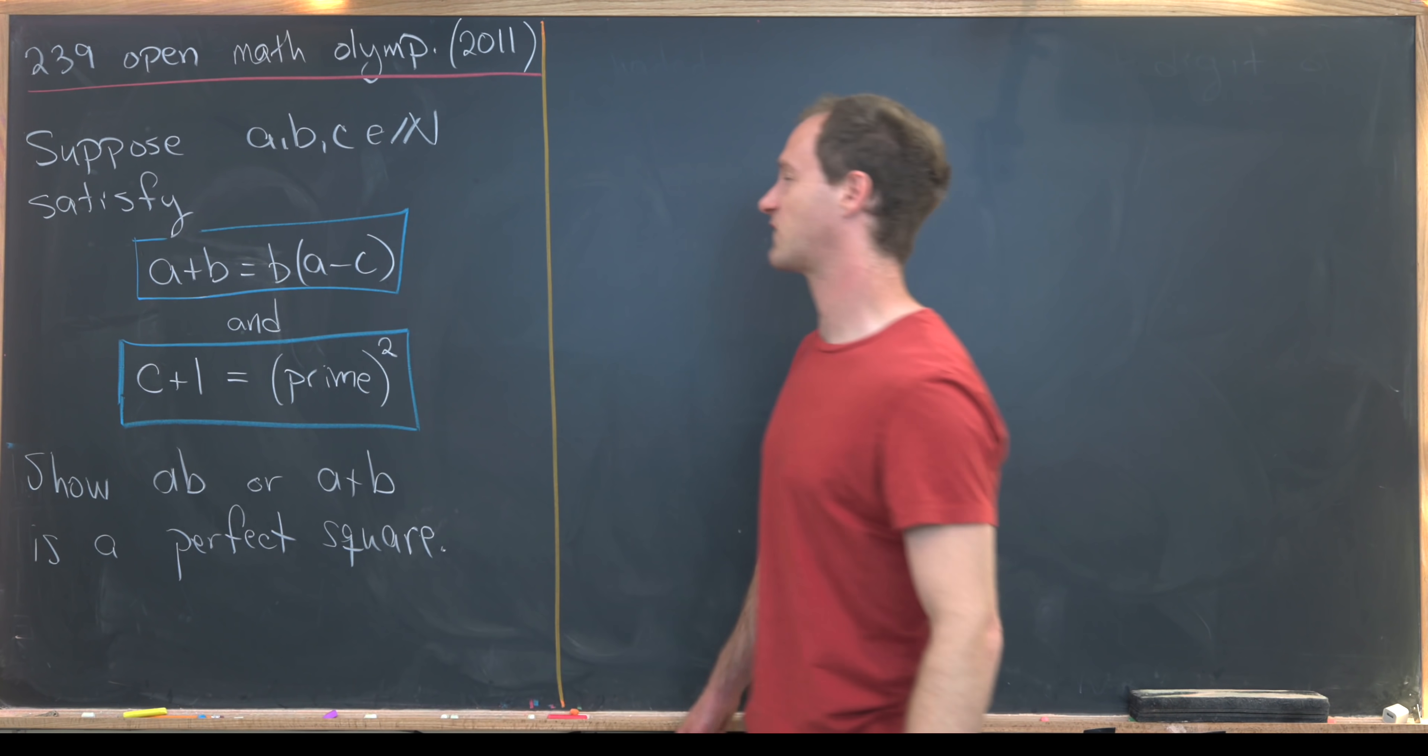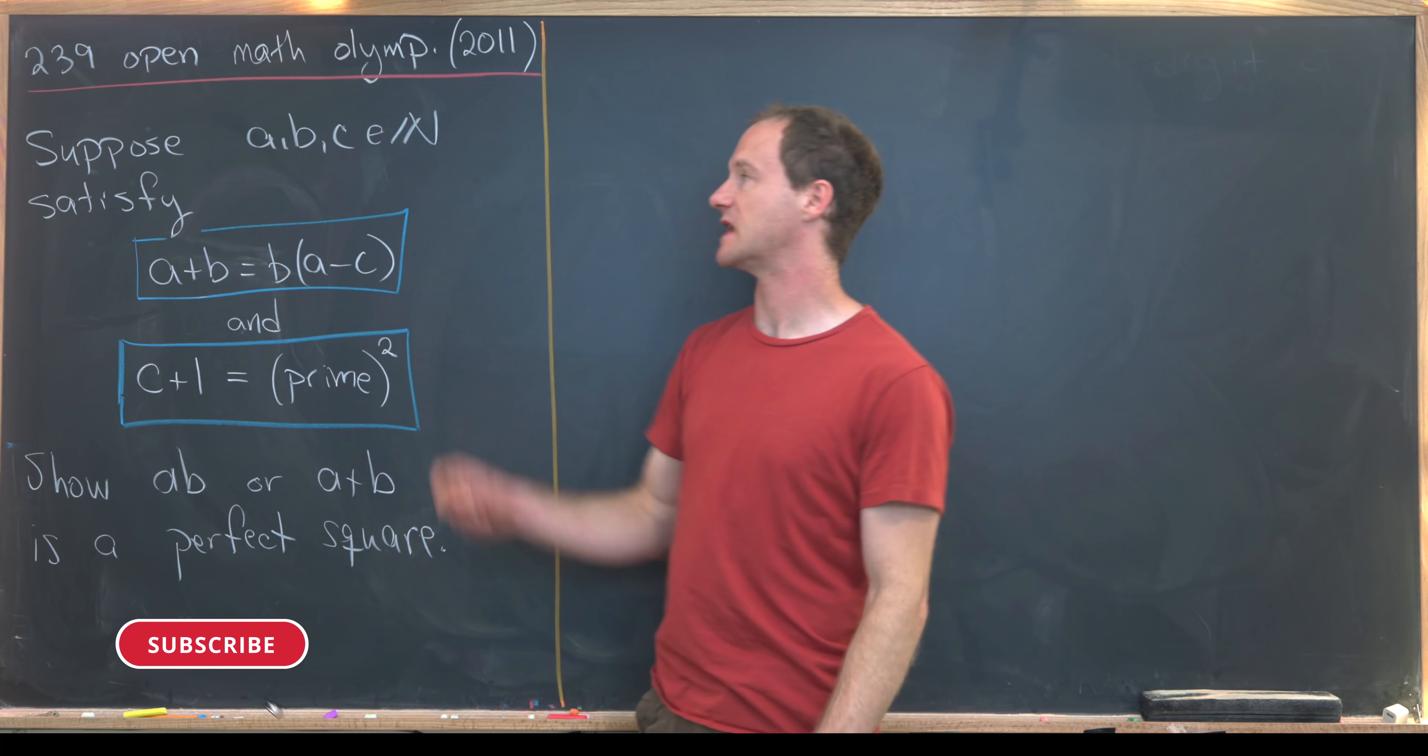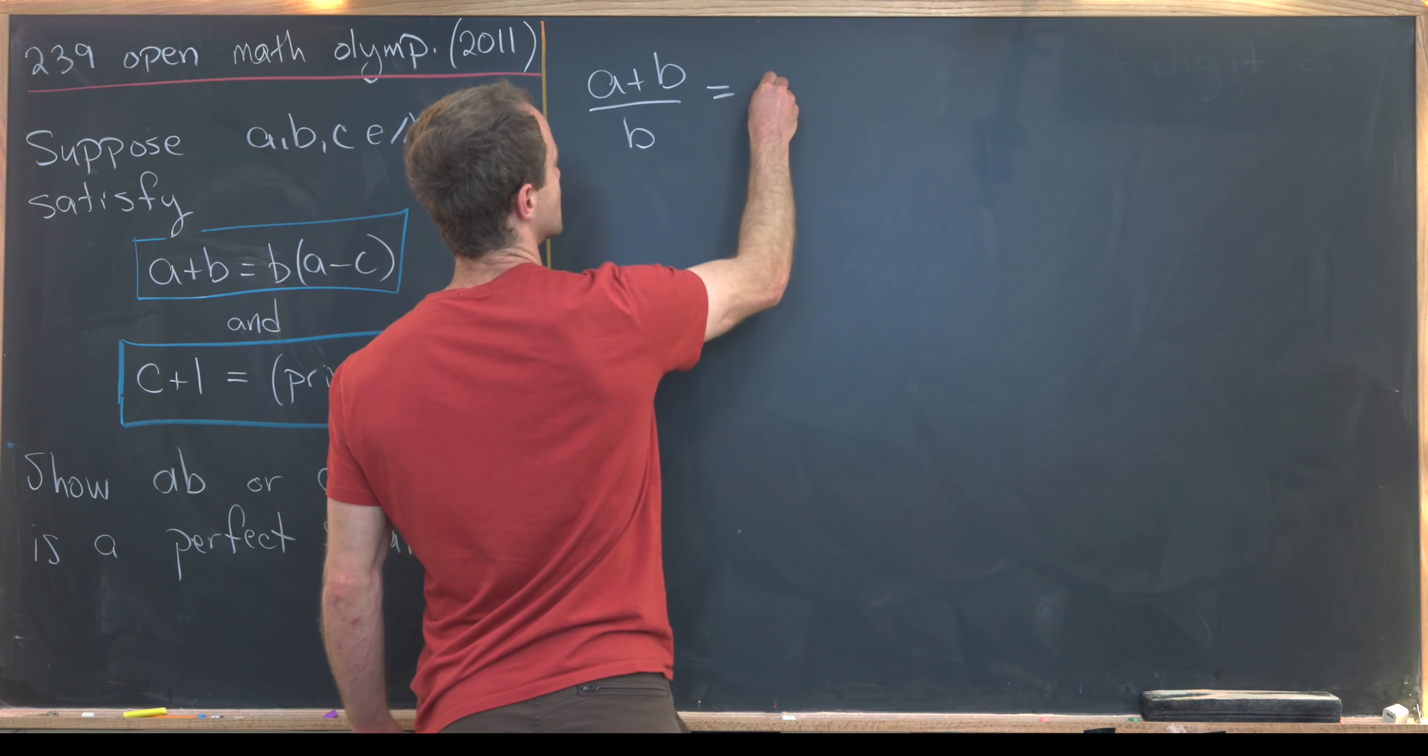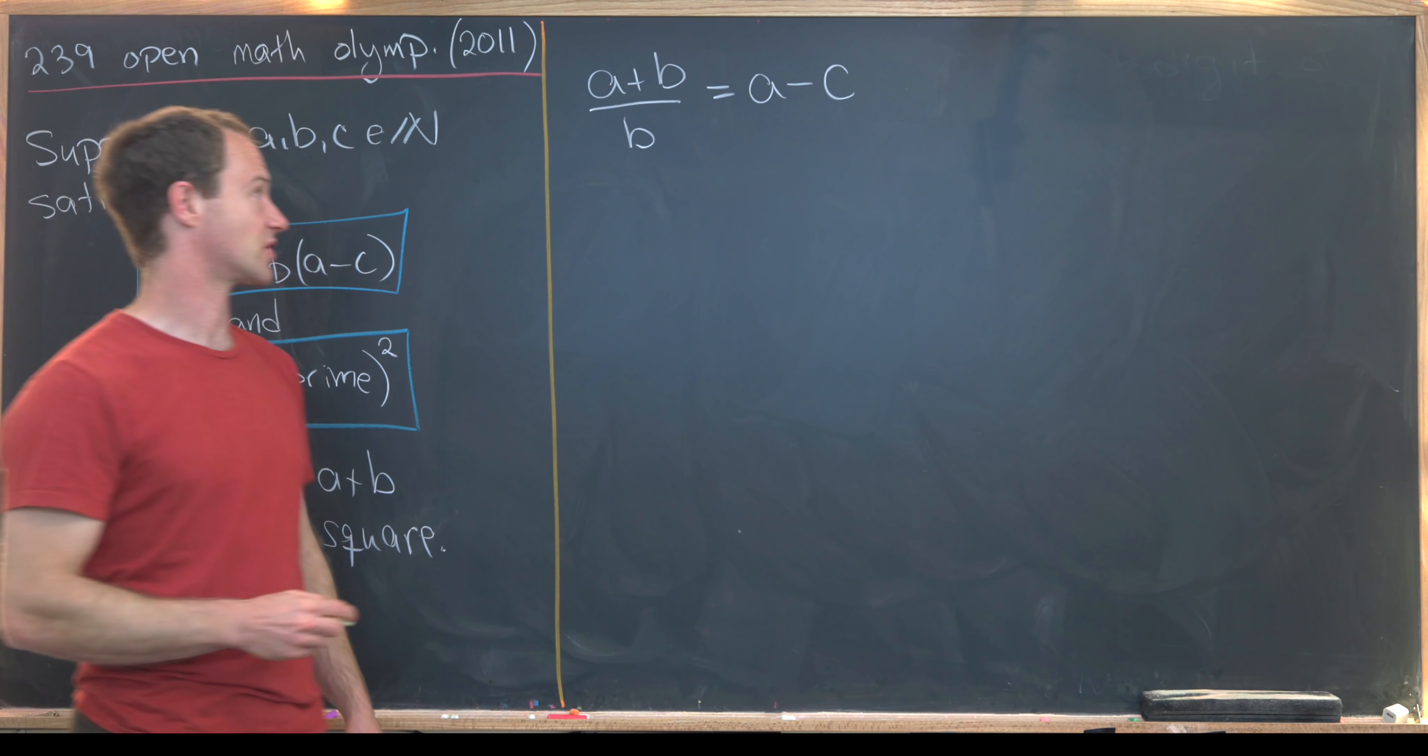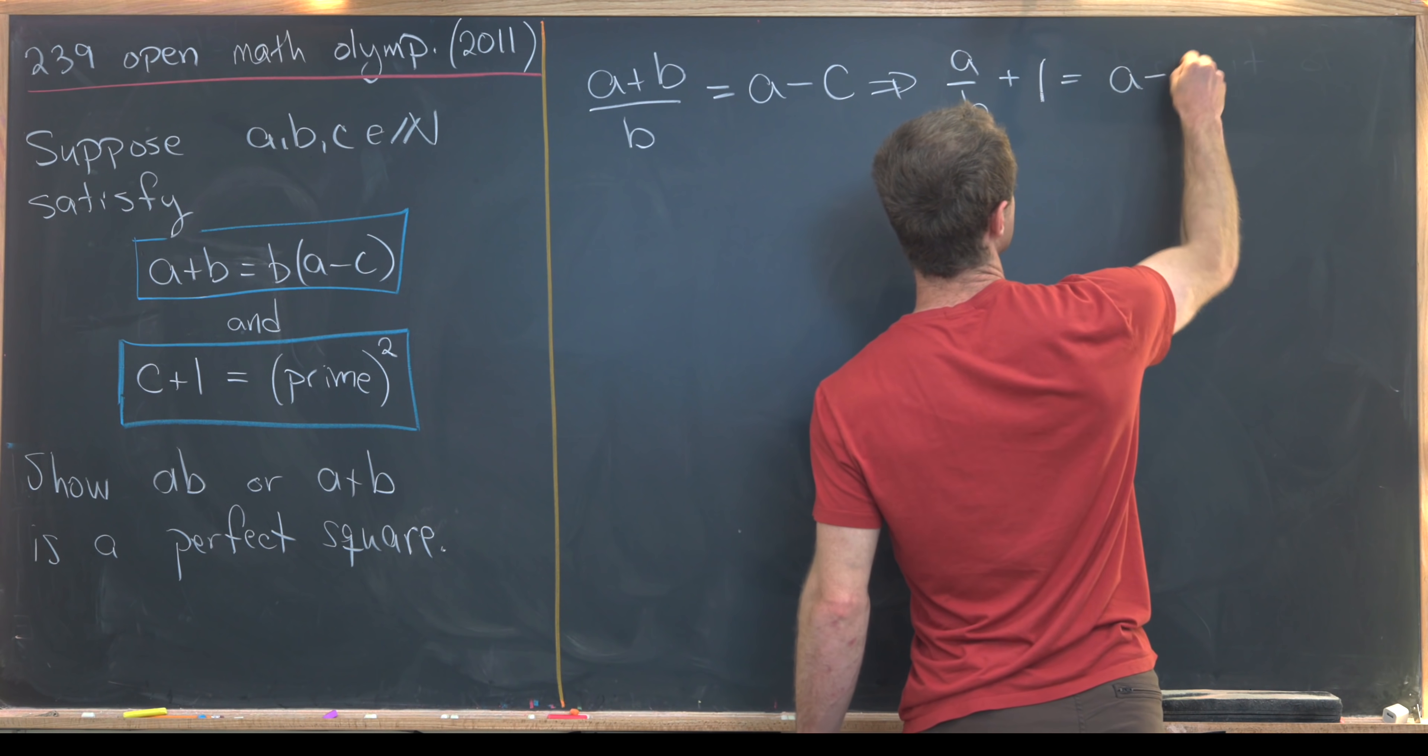We're going to start with this first condition and see what we can get out of that. I'll start with my first condition and divide the entire equation by b. I know that's allowed because b is a natural number, meaning positive integers. So that'll give me a new equation which looks like (a+b)/b = a-c. Next I'll split this left hand side into separate terms. I'll have an a/b term and then plus a b/b which is one, equals a minus c.